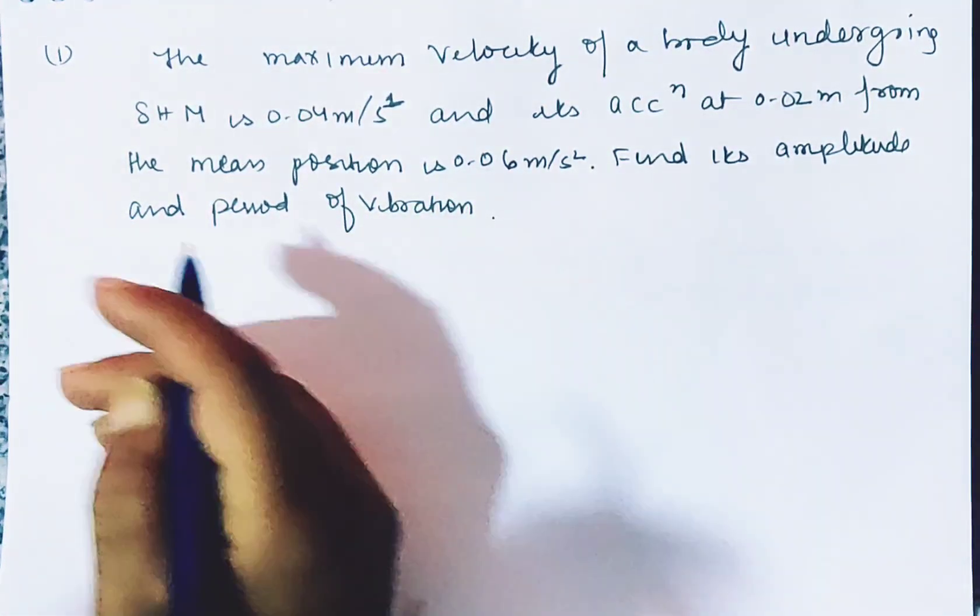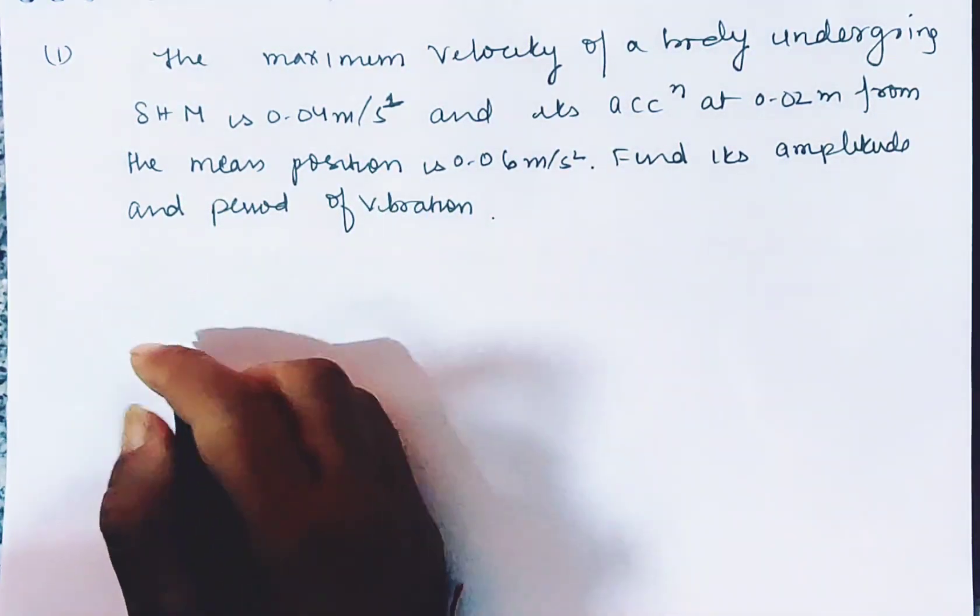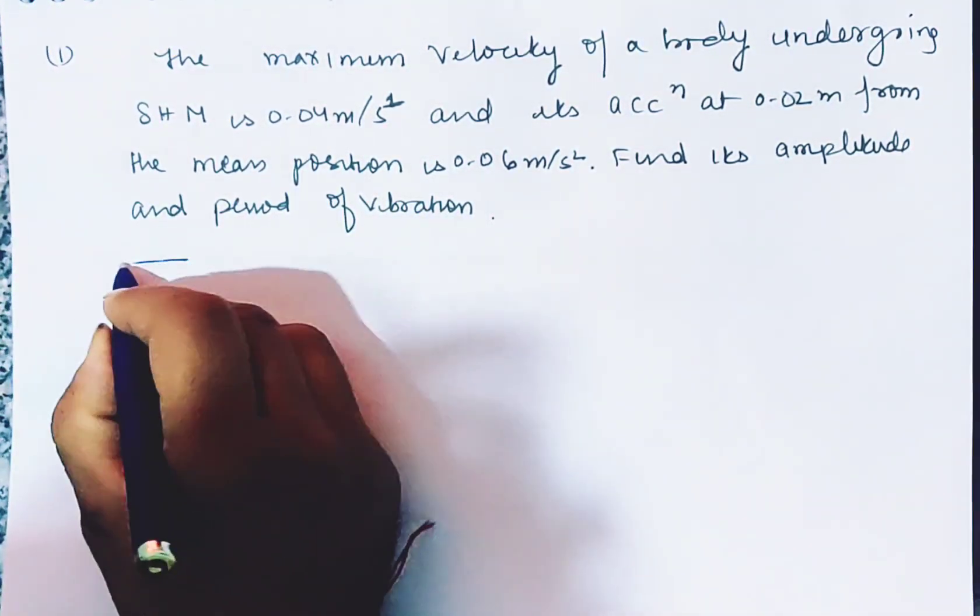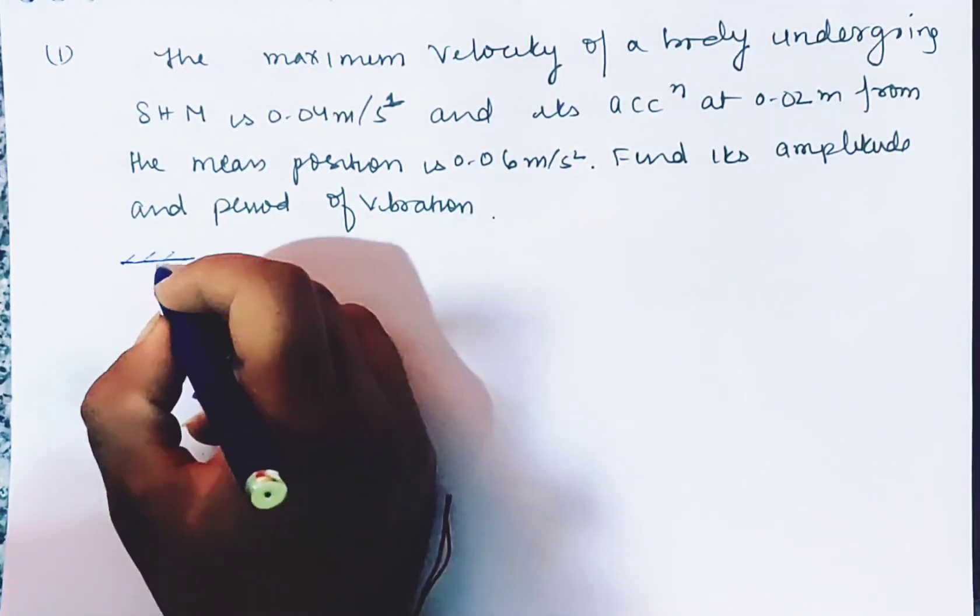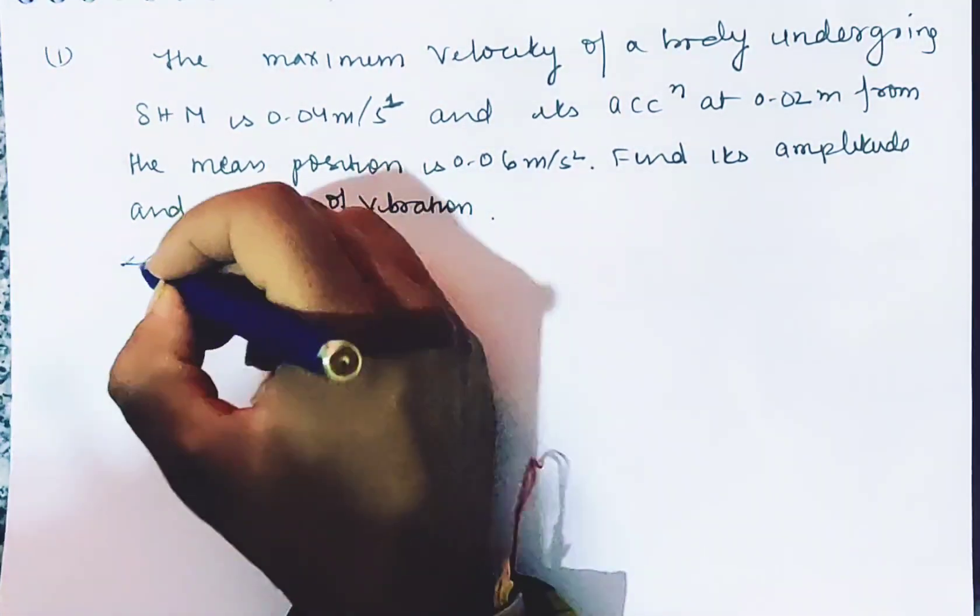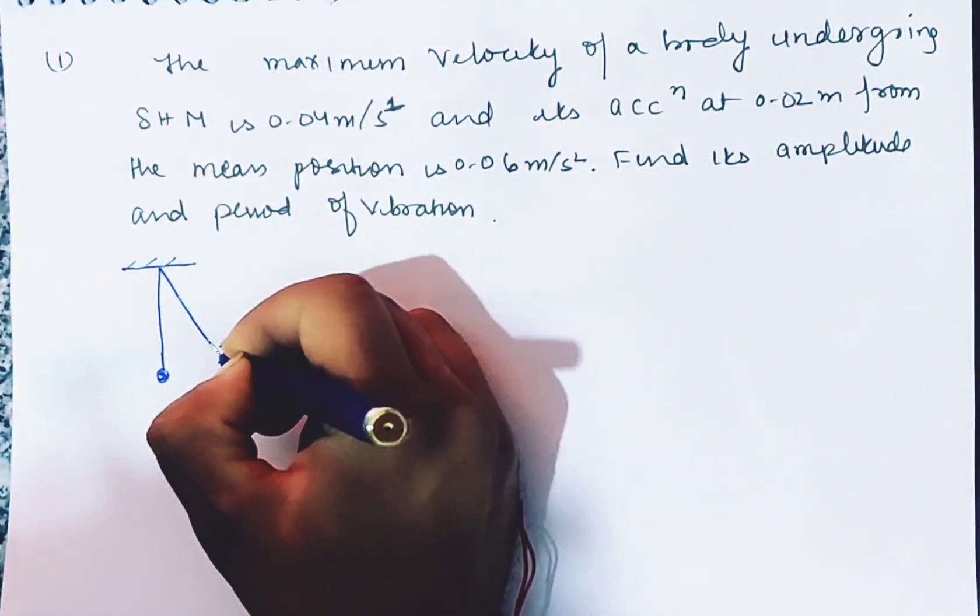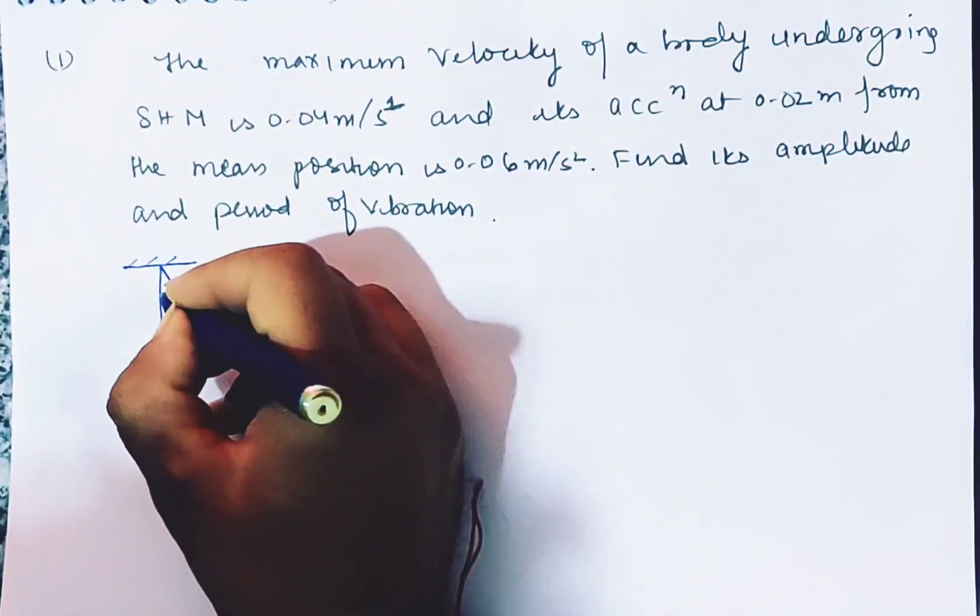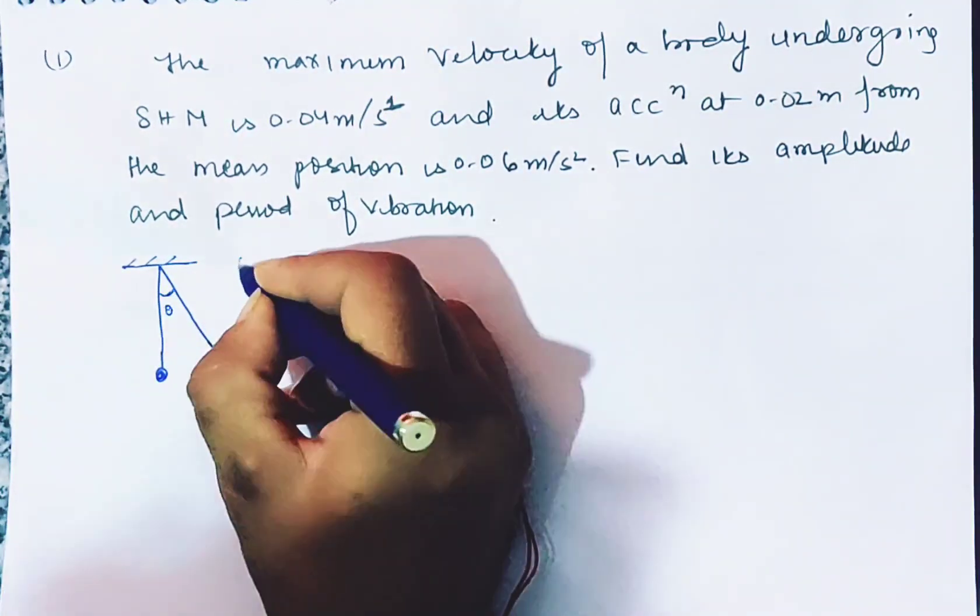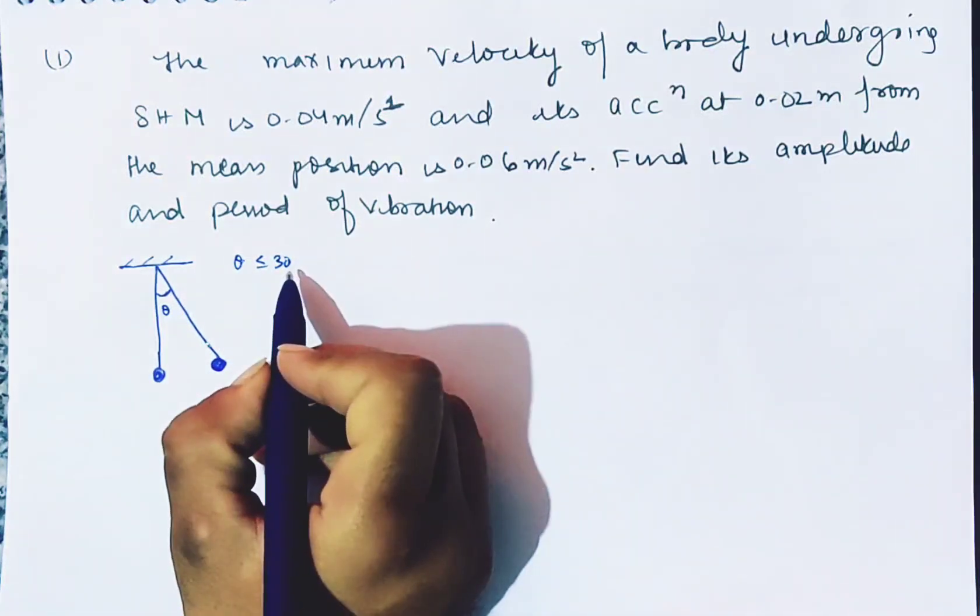If you have any example of SHM, you can try to figure out a pendulum. Now the pendulum is 0.03 meter per second. It is quite small. The angle should be very small. If you have less than 30 degrees, it is better, because 30 is a small angle limit.